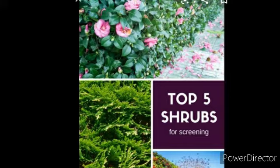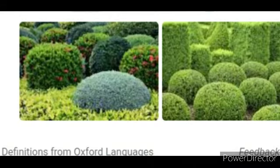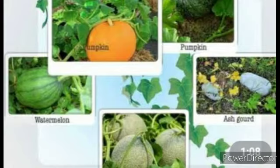This is an example of shrubs. Now children, see the next picture — this is also an example of shrubs. Next one: creepers. Creepers means they need support to grow. They are growing on the ground side and need support to grow.